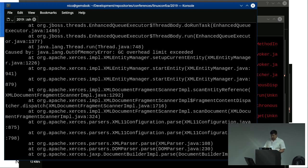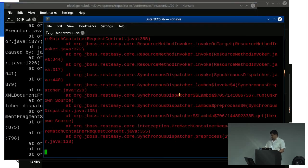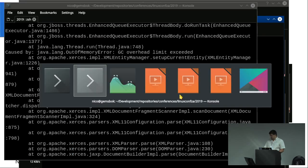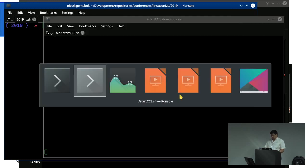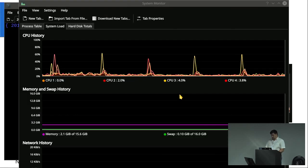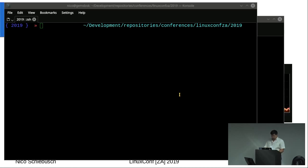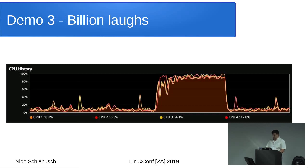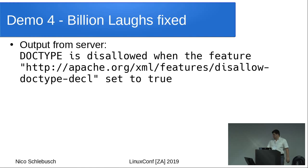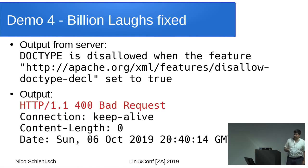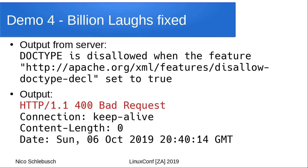When you submit one of these requests to a server that has been fixed, you'll get a message saying the doc type is disallowed when this feature — that's the whole string you have to give Java parsers not to evaluate doc types — is set to true. See what the server responds with: a 400 Bad Request. And it doesn't affect any of your further processing.